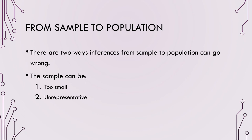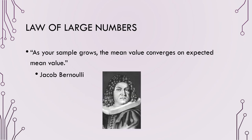Inductive reference can go wrong in two ways: either the sample is too small and therefore not representative enough, or the sample is unrepresentative and doesn't account for the diversity within the population. Using the law of large numbers, we can ensure our sample is of a number representative enough. As a sample grows, the mean value converges on the expected mean value.